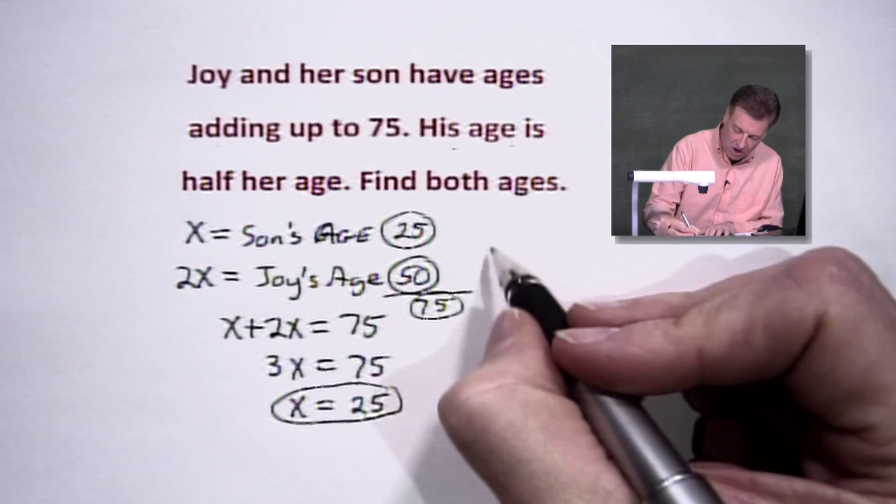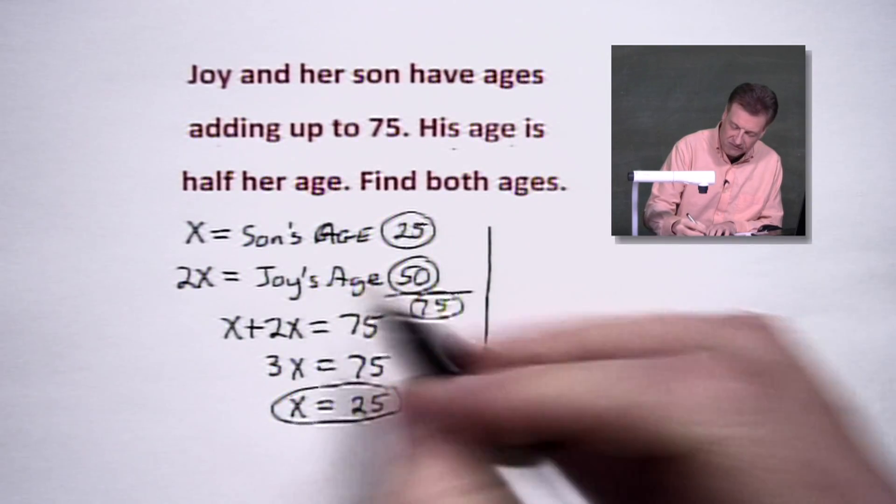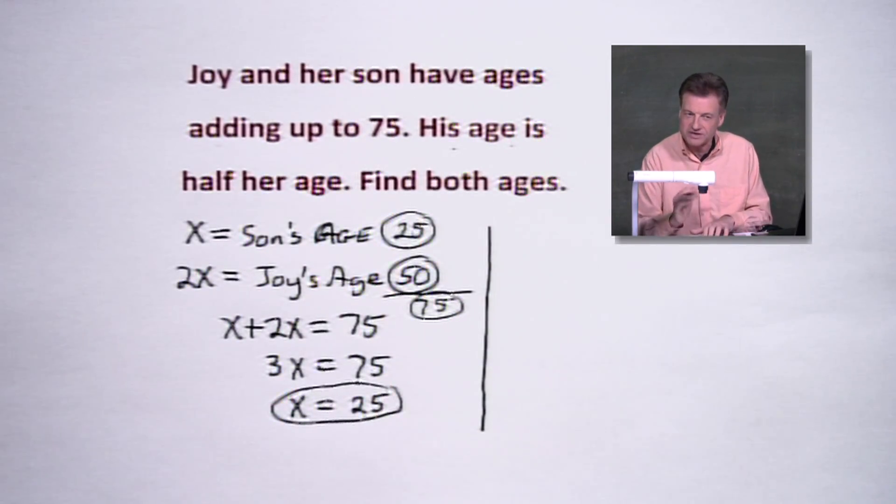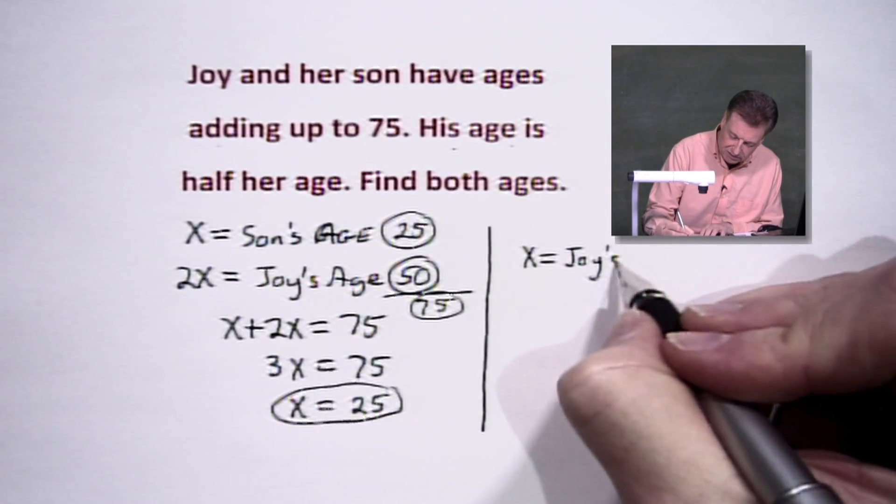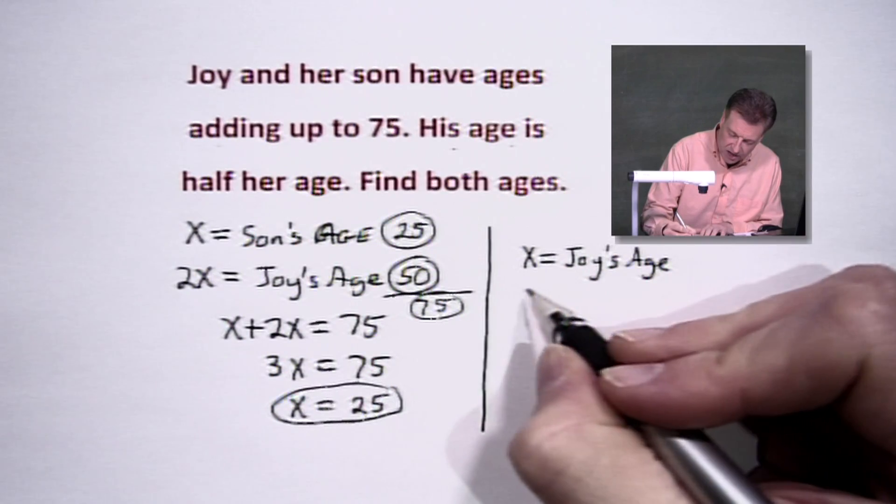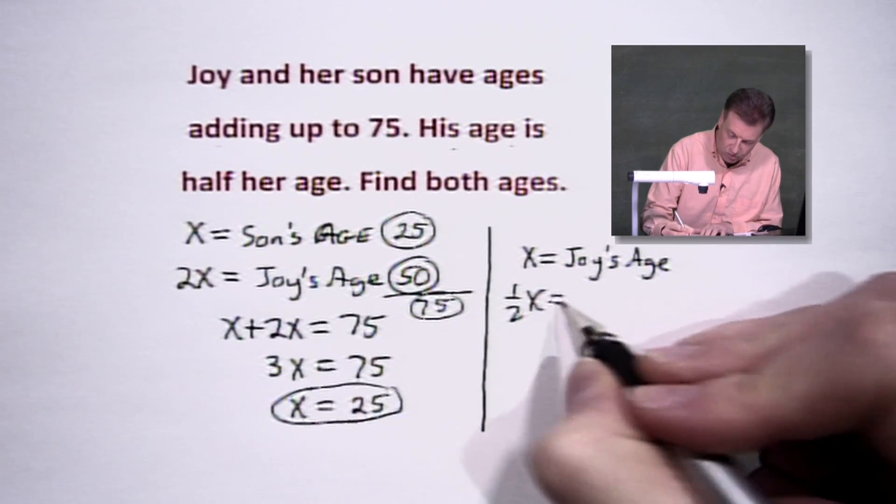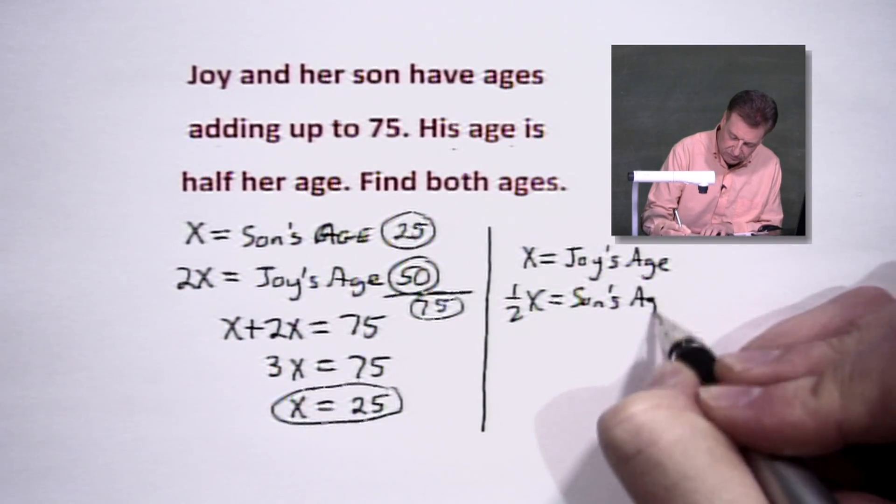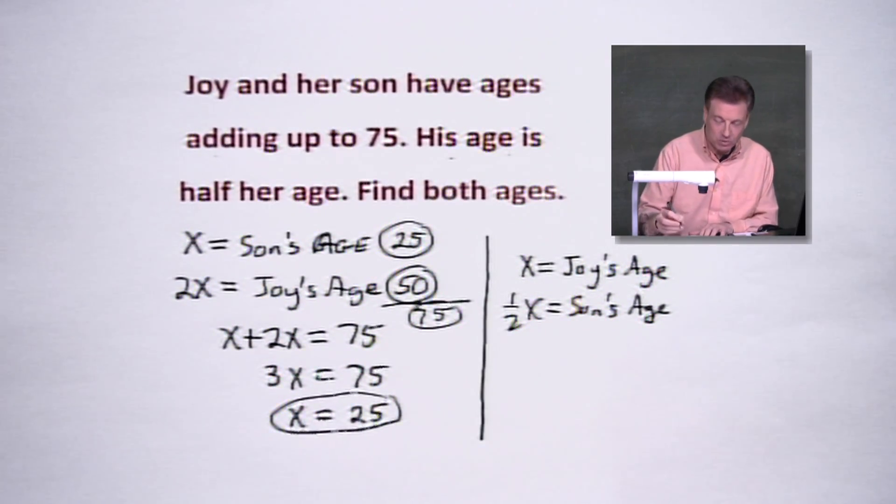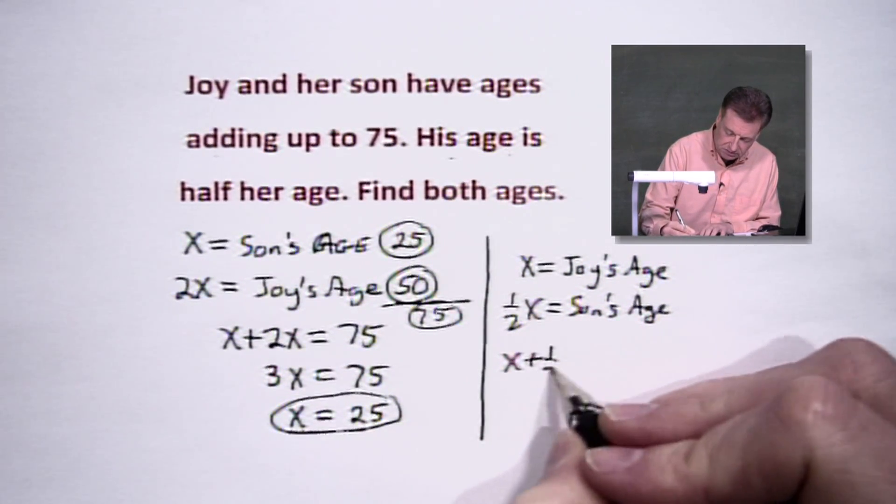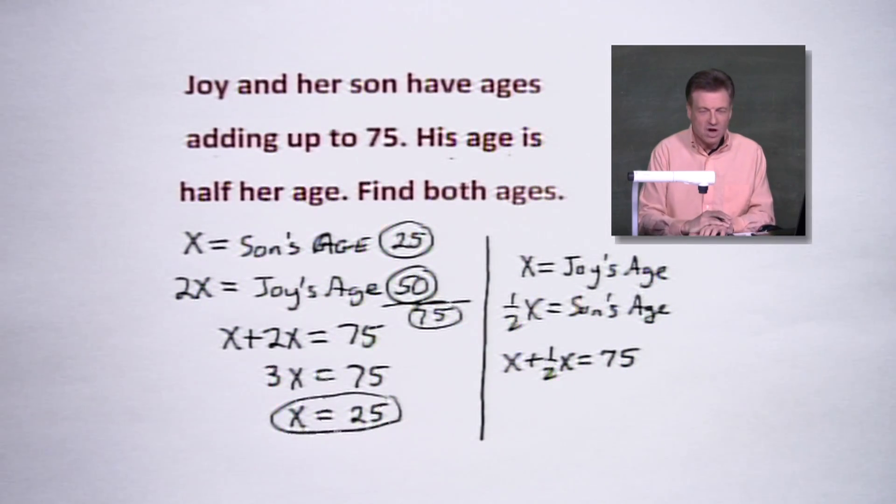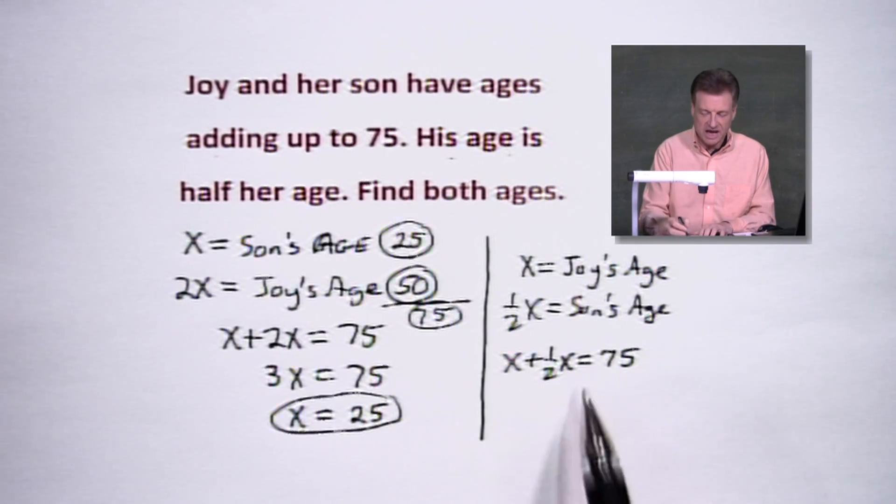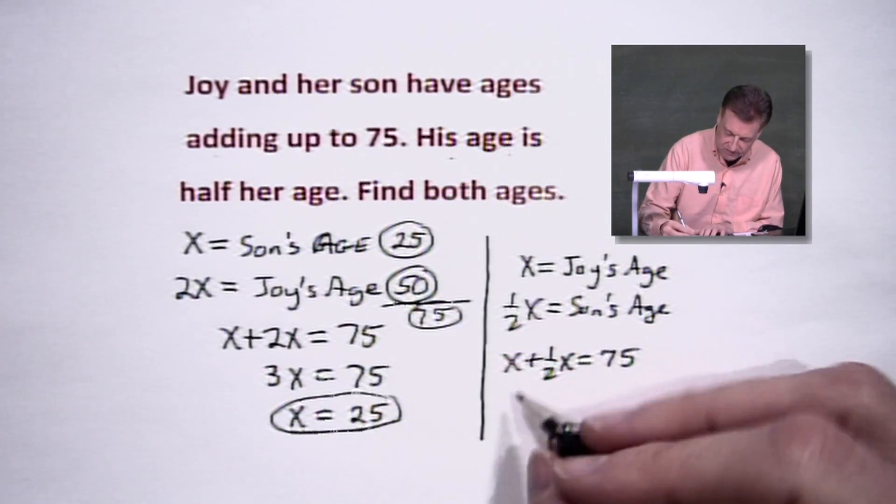Now, I did say there was another option. Some of you may have let X be Joy's age. I know some of you work these things out at home. So if you let X equal Joy's age and you let one half X equal the son's age, the story is still the same. We would add these together and let that equal to 75. You say, well Ernie, is that going to give us the same value? I mean, you've got a different X here, right? And we could go ahead and say it's 1 and a half or, as you all love decimals, 1.5X.